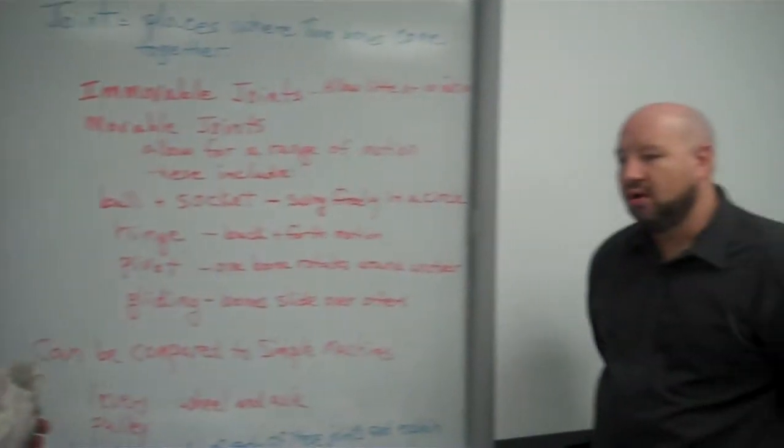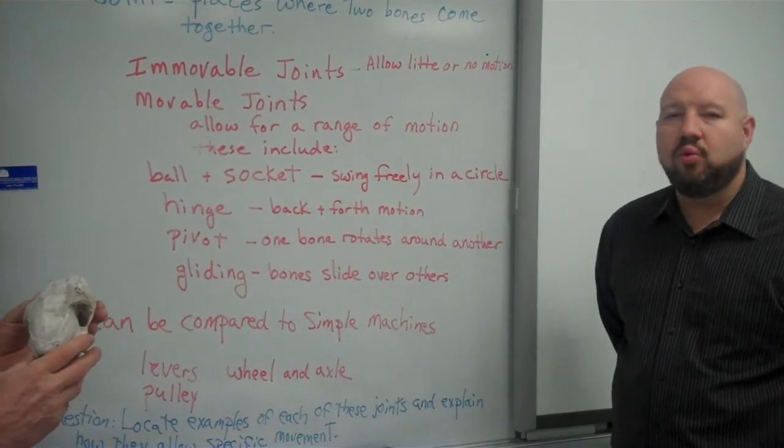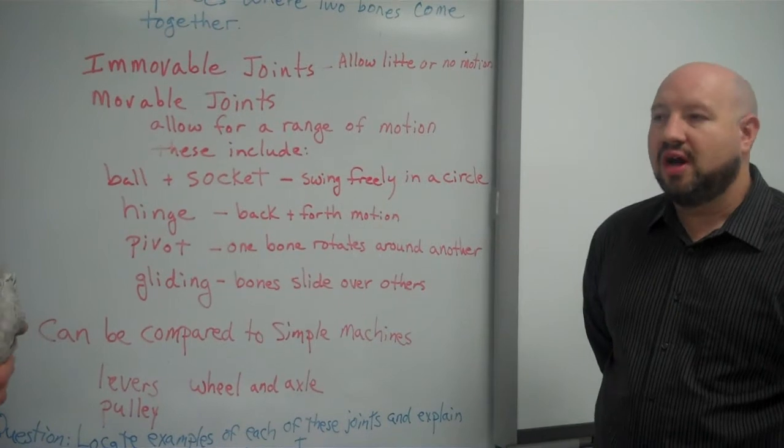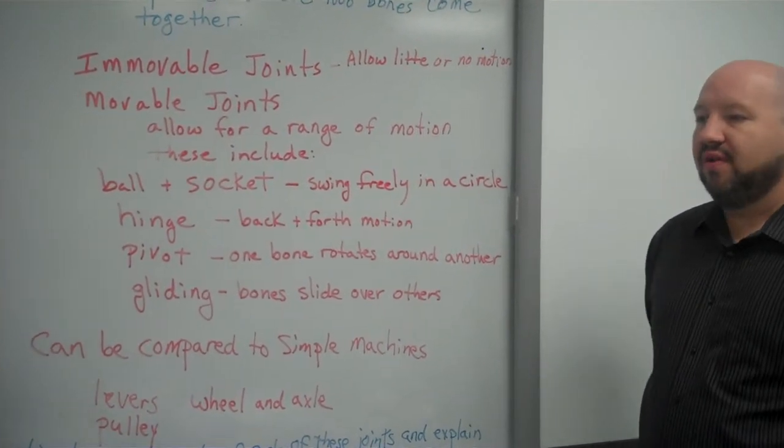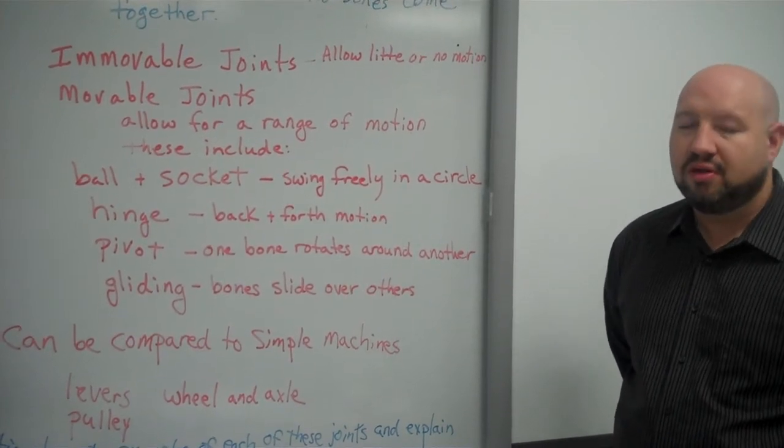And it's very important to understand why we have immovable joints. The whole reason why we have immovable joints in our cranium is because of childbirth. And the fact that the baby's head needs to be able to move through the birth canal.